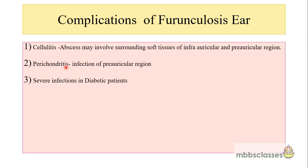Complications of furunculosis of the ear are not common, but in rare situations, the abscess in the ear canal may involve surrounding soft tissues such as the infraauricular or preauricular regions, leading to cellulitis. When the infection spreads to the cartilage, it can lead to perichondritis. In immunocompromised patients, such as diabetics, it can lead to severe infection.